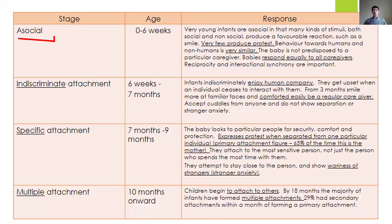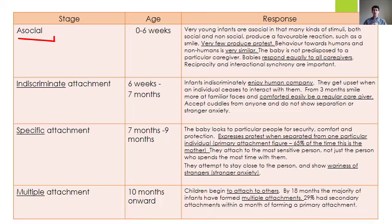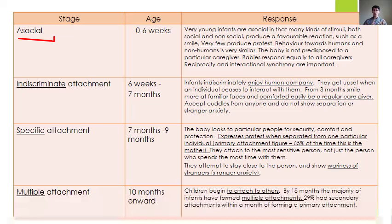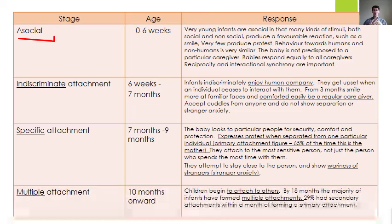From seven to nine months, children show specific attachment — attaching to one main person, which in 65% of cases is the mother. They look for comfort, protection, and security from that one person. As established, it's not the person who spends the most time with them or feeds them — it's the person most sensitive to their needs. They also begin to show stranger anxiety at this stage.